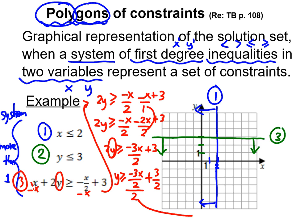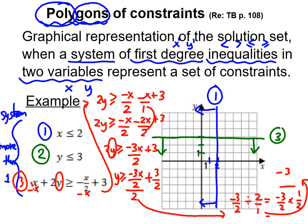To divide the fraction minus 3 over 2 divided by 2 over 1, you multiply by the reciprocal. You multiply top with top and bottom with bottom, giving minus 3 over 4. So coming back to the rule, you get y is greater or equal to minus 3 over 4 x plus 3 over 2.